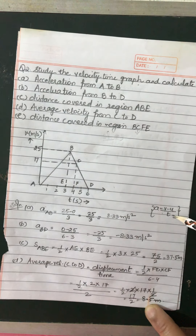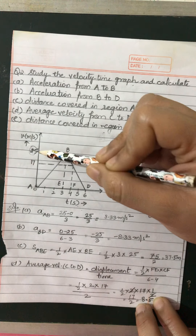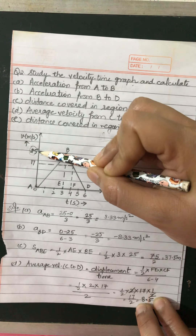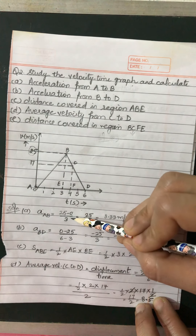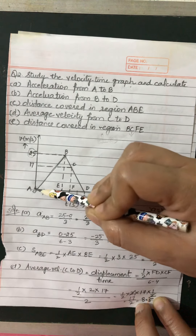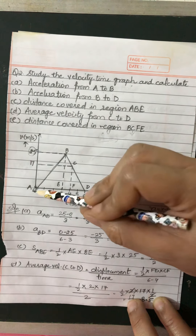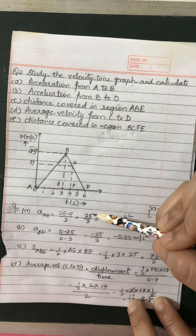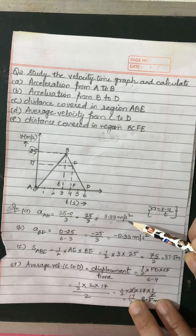Reading from the graph: the starting time is 0 and the final time is 3, so the time interval is 3 minus 0 = 3 seconds. Therefore acceleration = 25 minus 0 divided by 3 = 25/3 = 8.33 meter per second square.